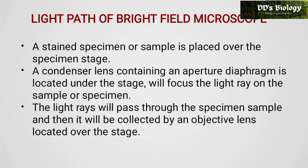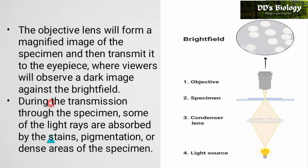The light path of the bright field microscope: a stained specimen or sample is placed on the specimen stage. First, there is a light source. Then there is a condenser lens, through which we observe a uniform light beam. The specimen is placed on the stage, and then the objective lens magnifies the specimen.